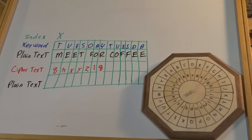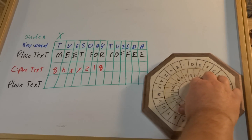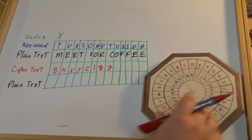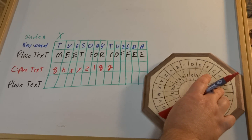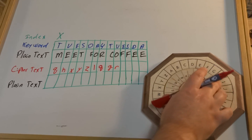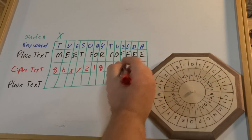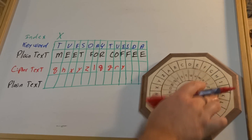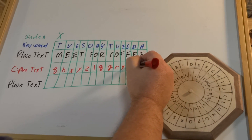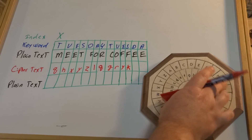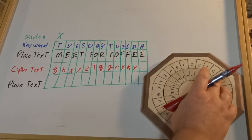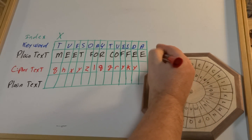So we set X to T and look for C — it encodes to G. We set X to U, we look for O, and encode it to R. We set X to E again, we look for F, it encodes to Y. We set X to S, look for F again, and that's K. And then we set X to D — we look for E, it encodes to Y. And then we set X to A, look for E again, and this time it encodes to B.